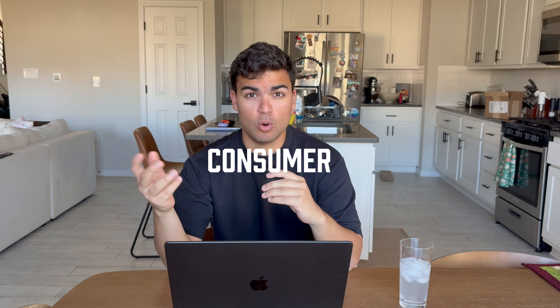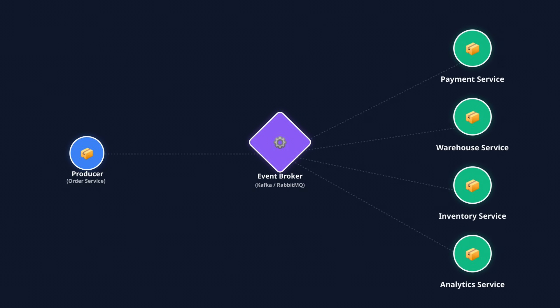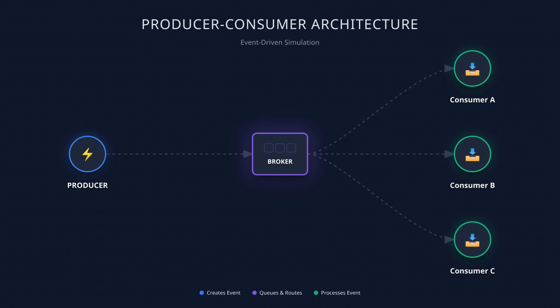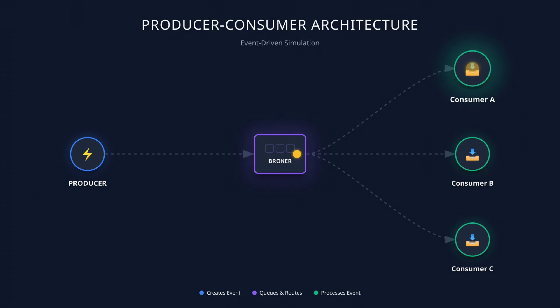And finally, we have the consumer — the services that react to events. For example, a single order-placed event could trigger multiple things, like payment processing, updating a warehouse, updating an inventory UI on the site, logging analytics, and starting fraud checks. All of these could be handled by different services which independently consume that event. These consumers can scale completely independently too — one might have one worker, another might have 500, depending on the workloads they're seeing. So here's the entire flow: a producer produces an event like "order placed," the broker stores and delivers it reliably, then consumers process that event in parallel. There are no direct service-to-service calls, no blocking chains, and no cascading failures.